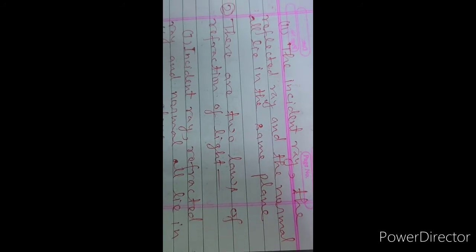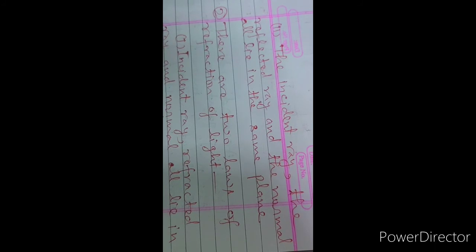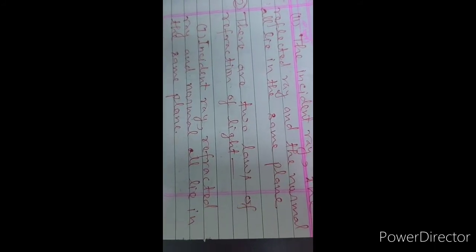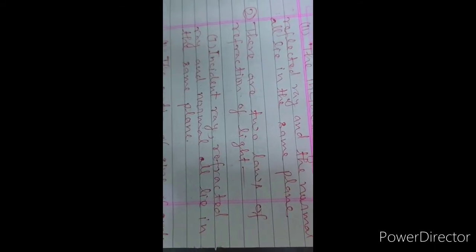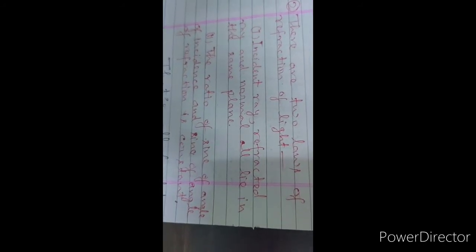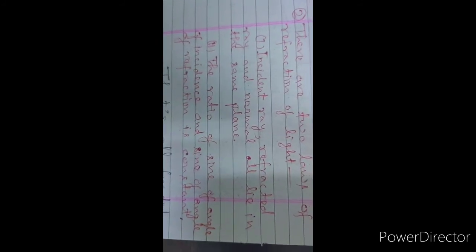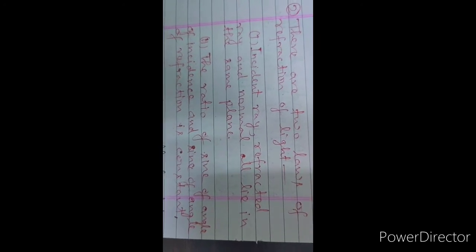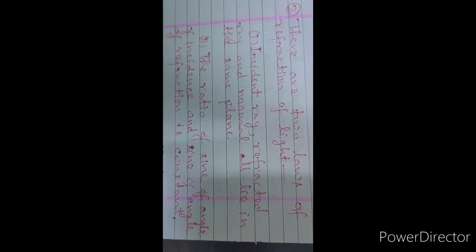The second law: the ratio of the sine of the angle of incidence and the sine of the angle of refraction is constant. This means that the incident ray, the refracting ray, and the normal ray are in the same plane, and the ratio of the sines of the angles is constant in the second medium relative to the first medium.